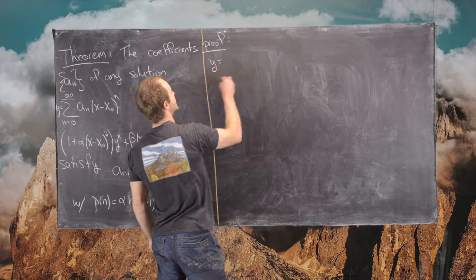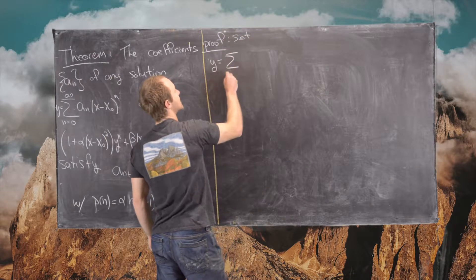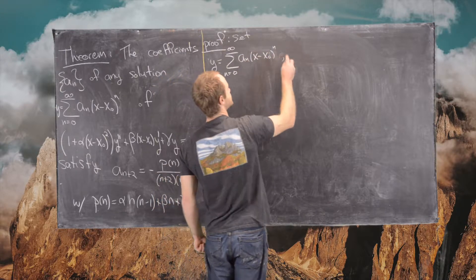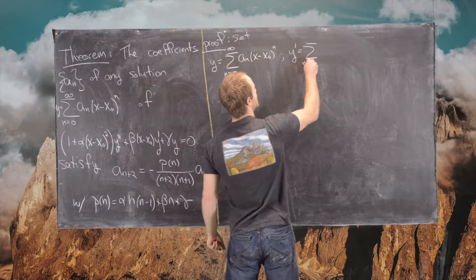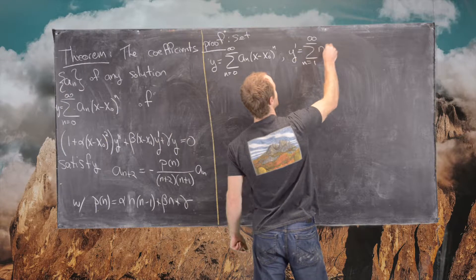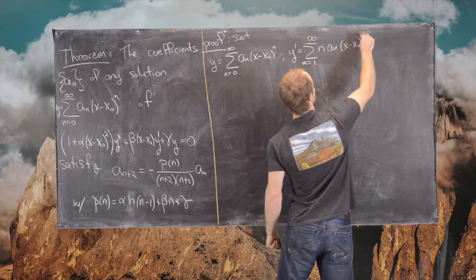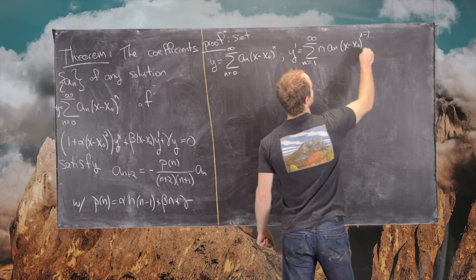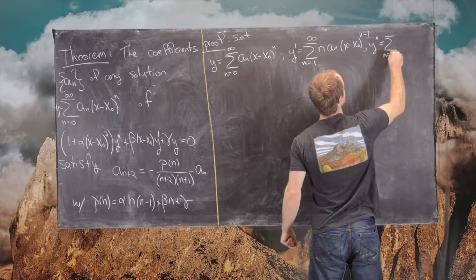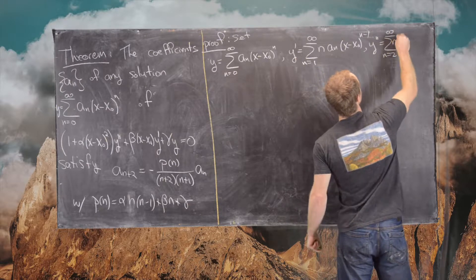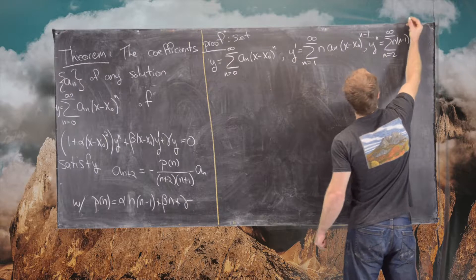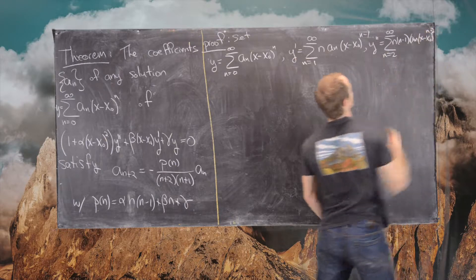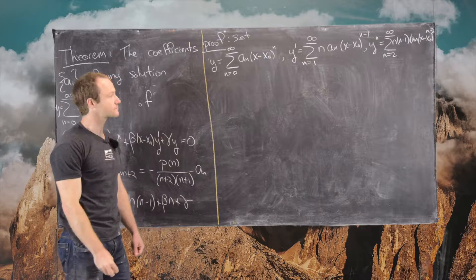We set y equal to the sum from n equals 0 to infinity of a_n (x minus x₀)^n. So that tells us y' equals the sum from n equals 1 to infinity of n·a_n·(x minus x₀)^(n−1). And likewise, y'' equals the sum from n equals 2 to infinity of n·(n−1)·a_n·(x minus x₀)^(n−2).